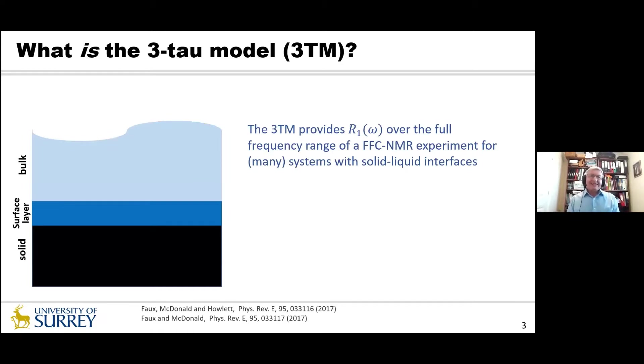Okay so what is the three tower model? Well it's a model that generates the relaxation rate dispersion curve over the full frequency range for a good range but certainly not all systems with solid liquid interfaces. And there's a schematic on the left of our solid and our liquid system. So in the model the liquid must contain protons so we will generally assume that the liquid is water but it need not be. The solid either contains paramagnetic ions or it doesn't contain paramagnetic ions.